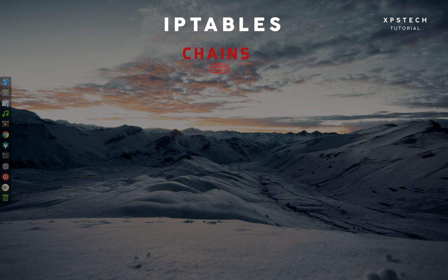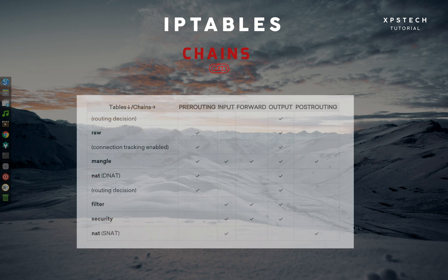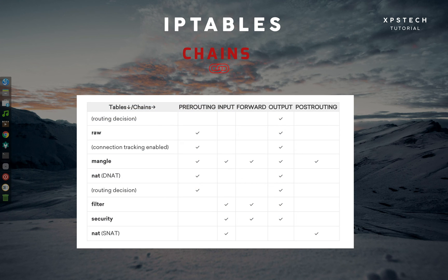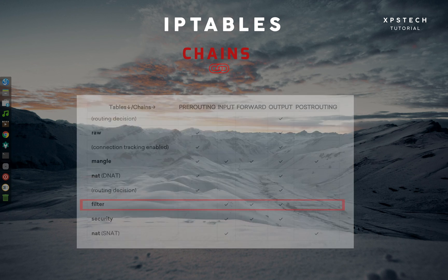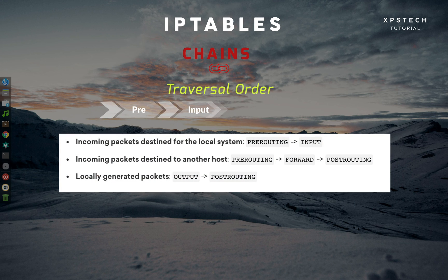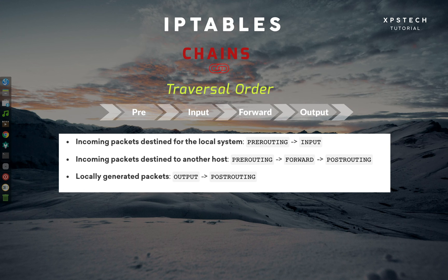Not all chains are available for all tables, so we need to know which chain is available for which table. We should also know the order in which chains are called for each table and the chain traversal order. This figure shows the order in which chains are called for different tables and chain availability. For the filter table, you have three chains: input, forward, and output. For incoming packets to the local system, the traversal order is pre-routing then input. For incoming packets forwarded to another host, the traversal order is pre-routing, forward, and post-routing. For locally generated packets, the traversal order is output and post-routing.